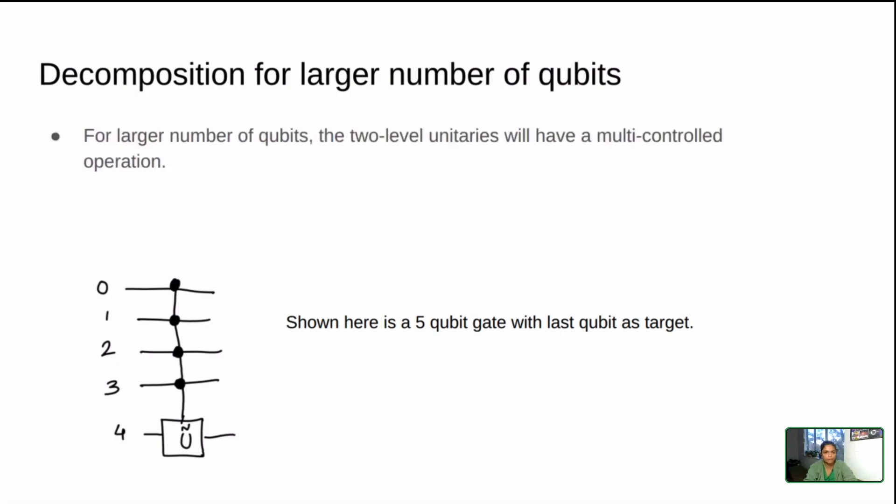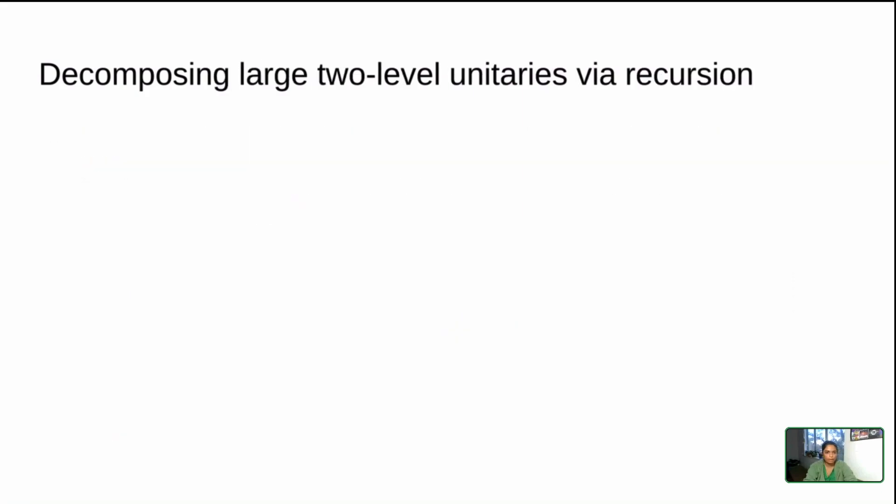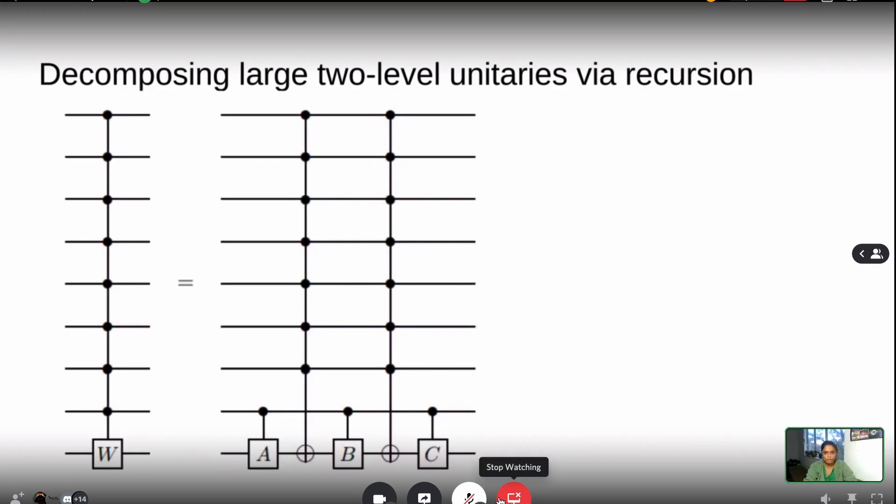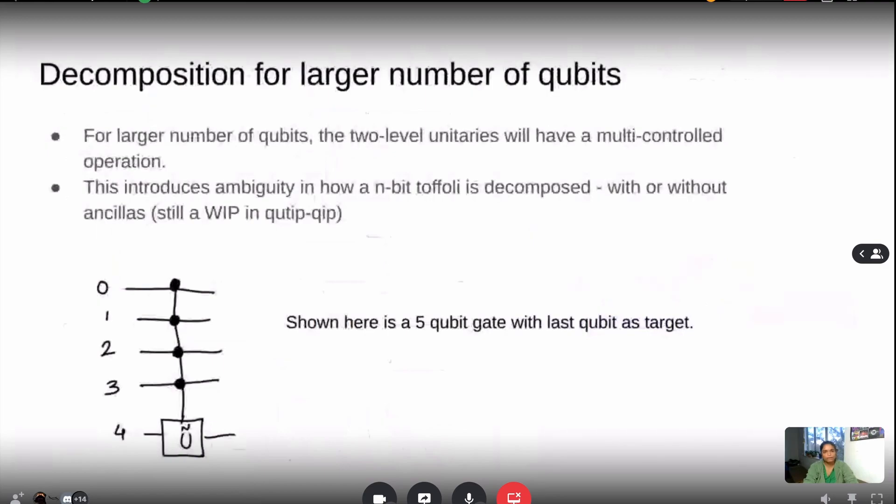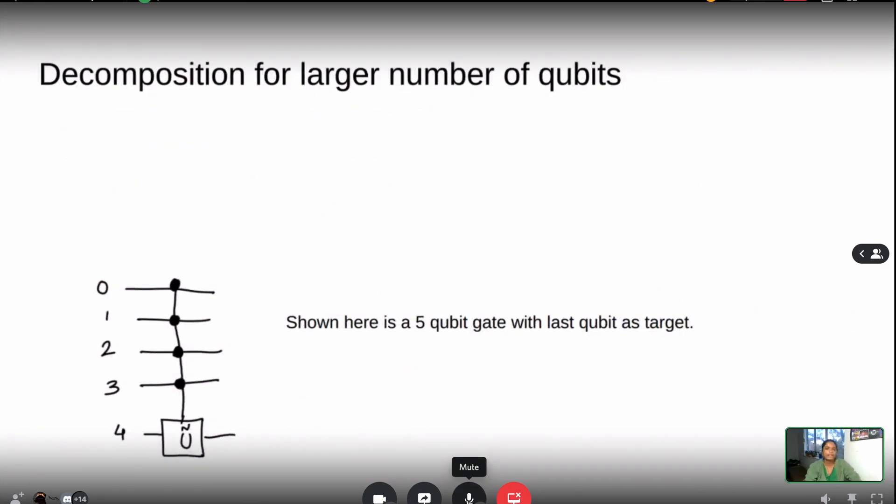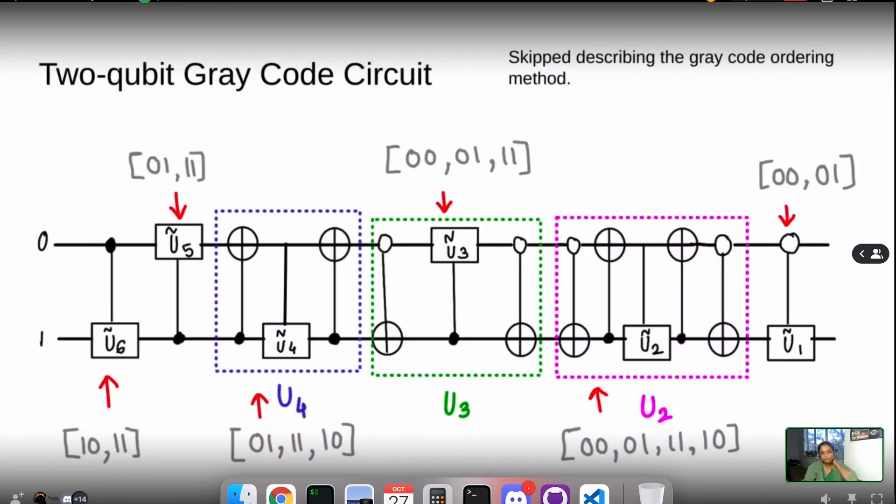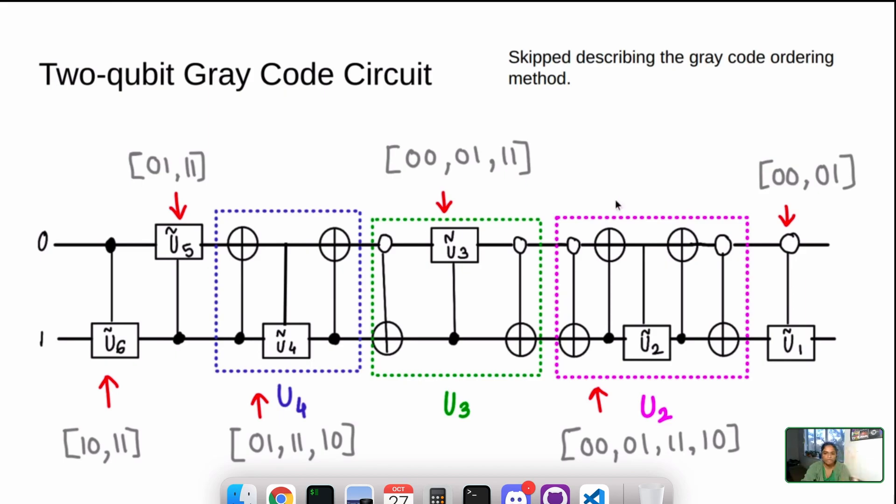I'm going to just skip through a slide. I think it's okay if we are a couple of minutes over time. Thanks Nathan. This is an example for a two qubit gate.